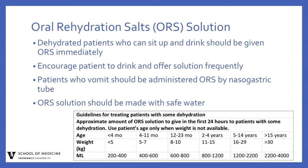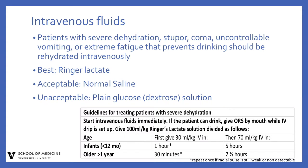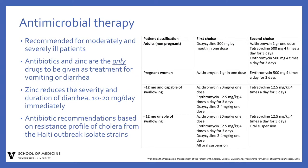Dehydrated patients who can sit up and drink should be given oral rehydration solution immediately. Always encourage the patient to drink and offer solution frequently. Patients who vomit should be administered ORS by nasogastric tube. Oral rehydration salts should be made with safe water if possible. Patients with severe dehydration, stupor, coma, uncontrollable vomiting, or extreme fatigue that prevents drinking should be rehydrated intravenously. The best solution to use is Ringer's lactate; normal saline is acceptable. Never use dextrose solution.